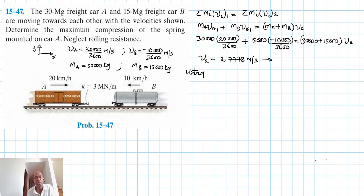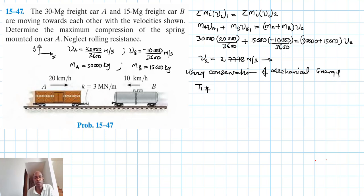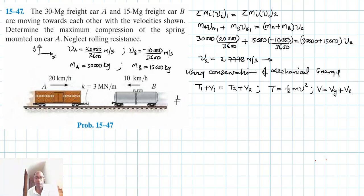Since we are interested in finding the compression distance, we use conservation of mechanical energy: T1 plus V1 equals T2 plus V2, where T is kinetic energy and V includes both gravitational and elastic potential energy. In the first state, we have one-half m_A times vA1 squared plus one-half m_B times vB1 squared.